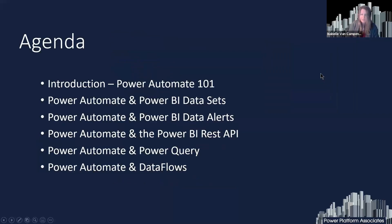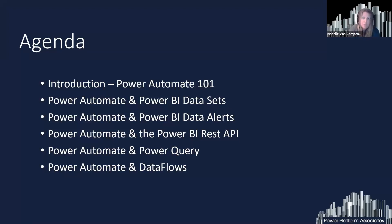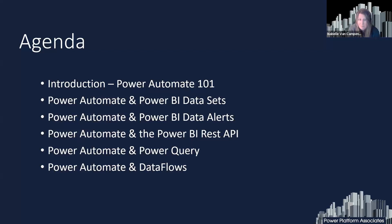Let's talk about the agenda. First, we'll have a look at what we can call Power Automate 101, to place the right product at the right place — what it is, what the architecture is on the Power Platform. Then we'll go through the different points: Power Automate and the Power BI dataset, what actions are available, then Power BI data alerts in relation with Power Automate, then the Power BI REST API and Power Automate, Power Query in Power Automate, and Power Automate and dataflows.